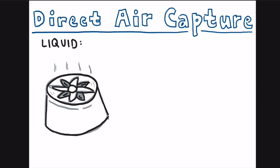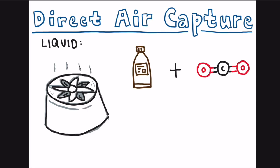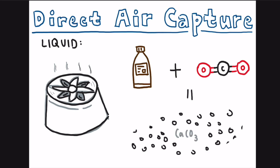In the liquid system, an industrial fan is used to pass air over a chemical solvent, which reacts with the carbon dioxide in the air to produce a CO2-rich solution, from which calcium carbonate pellets are then precipitated out.